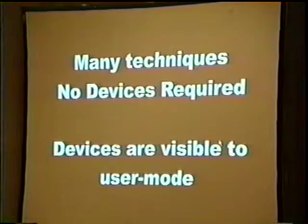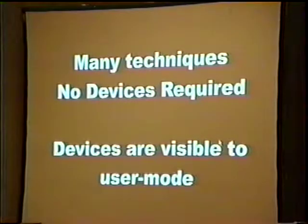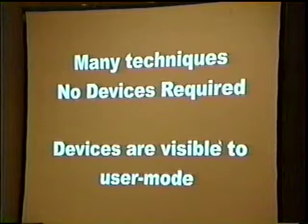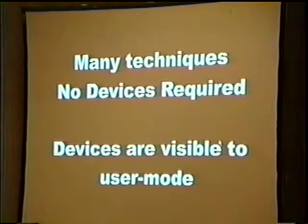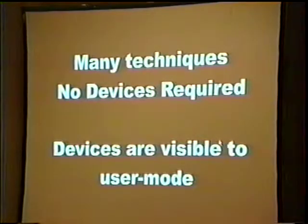Typically, device objects are visible to user mode, so they're not very good for stealth. The keyboard hook in the rootkit uses this method, and it can be used for all kinds of things — to hook your audio-video subsystem, your mouse, your serial port, your USB devices. But there are many techniques which do not require the device object. File, process, and directory hiding don't require a device object in any way.